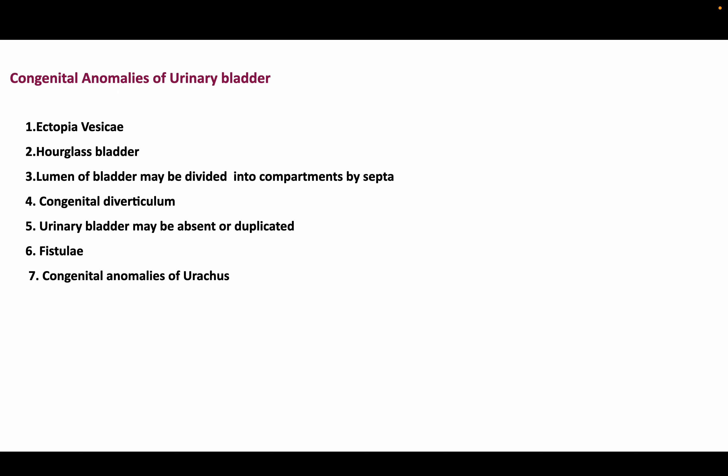With this knowledge we can understand the congenital anomalies of the urinary bladder. Common anomalies include ectopia vesicae, hourglass bladder where the lumen is divided into compartments by septa, congenital diverticulum, absence or duplication of the bladder, fistulae, and congenital anomalies of the urachus.